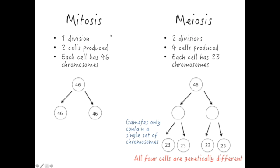Let's compare meiosis to mitosis to help us see what's going on. A recap of mitosis: there was one cell division whereby you had a cell of 46 chromosomes. Those chromosomes replicated themselves, then the cell divided and produced two identical cells, each with 46 chromosomes, or 23 pairs of chromosomes. Meiosis is different because it involves two cell divisions. This time four cells are produced, and each of those cells has only 23 chromosomes — not 23 pairs, just 23 chromosomes — so half of what a cell produced in mitosis has.